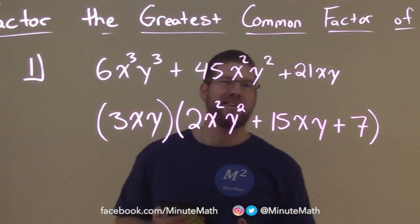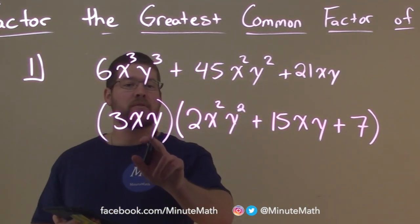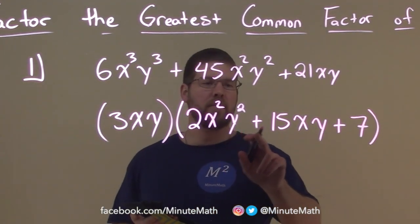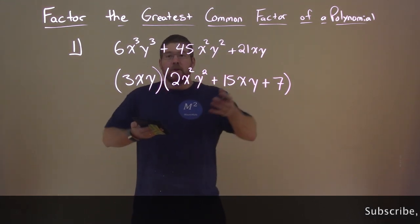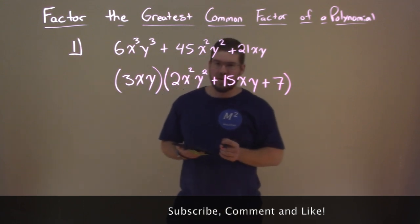And so we're done. We have our answer. We factored 3xy, the greatest common factor of this polynomial, times 2x²y² + 15xy + 7. So now you know a basic example of how to factor the greatest common factor of a polynomial.